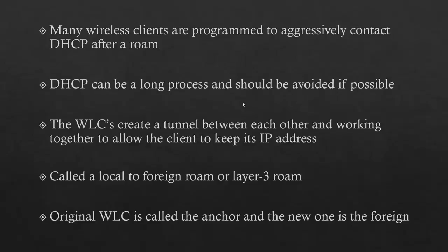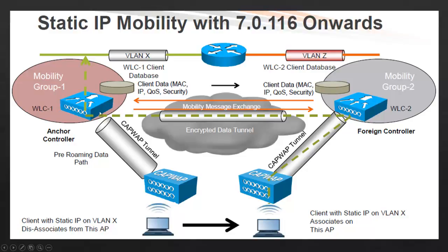Here's how it works: you're a client established on wireless LAN controller 1 on VLAN X. As you roam over, as long as you have mobility 7.0 and up on your wireless LAN controllers, what happens is a foreign to local roam. You talk to the new controller, it makes a tunnel between the original wireless LAN controller you previously associated with. The original becomes the anchor controller and the new one becomes the foreign controller. The anchor still controls you, so you don't have to change your IP address — he passes everything through his tunnel to wireless LAN controller 2, which passes it through the CAPWAP tunnel back to the client. The client never has to pull an IP address from DHCP.